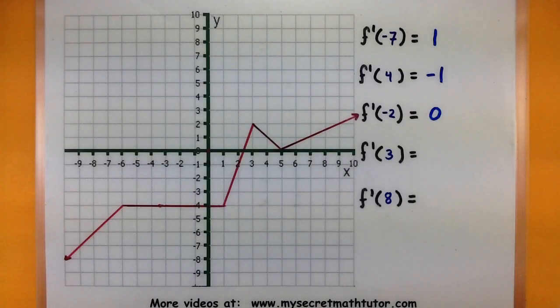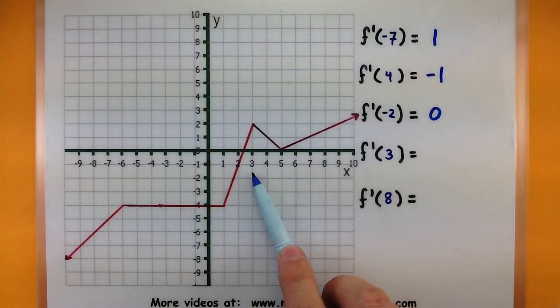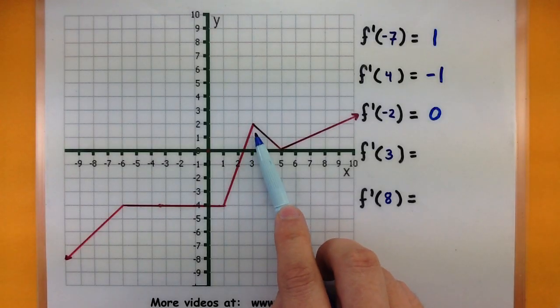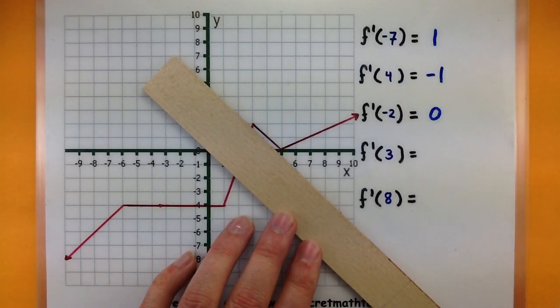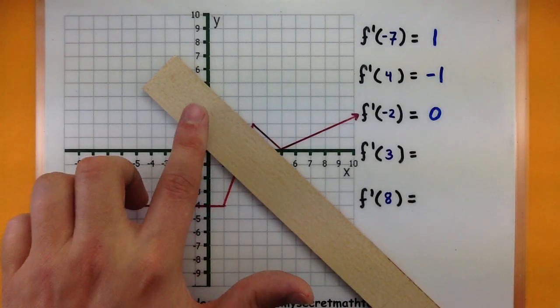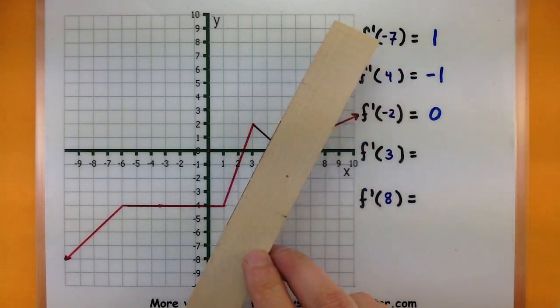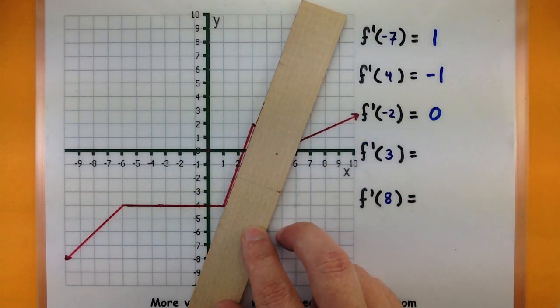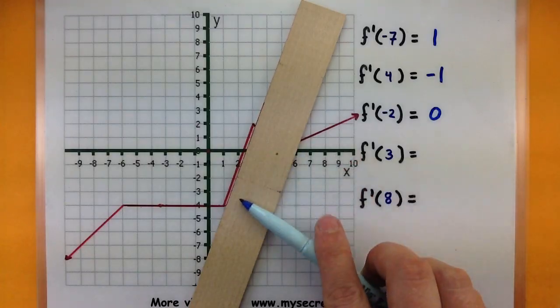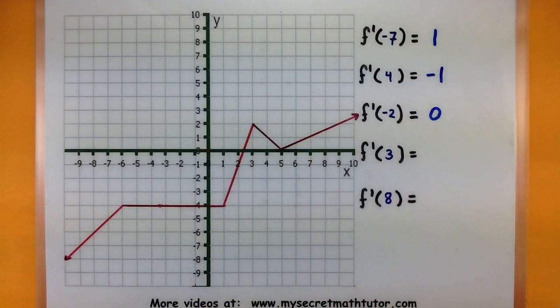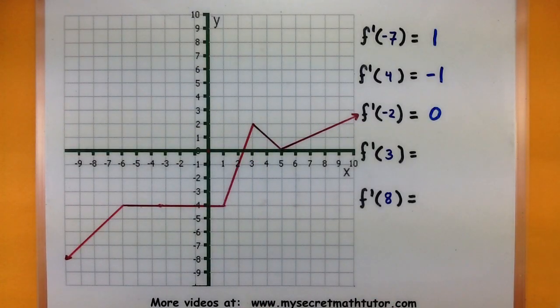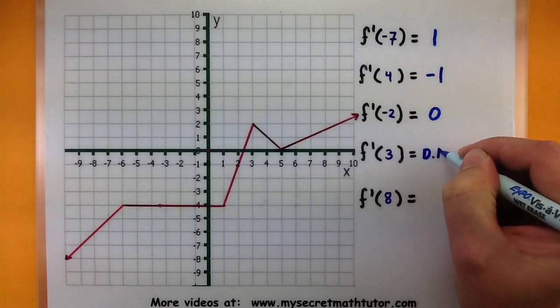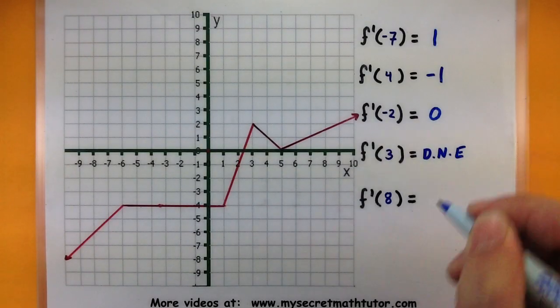All right couple more. What is the derivative at 3? Oh very interesting. Now notice that if we're looking at it say from the right side it looks like it has a negative slope. Things are going down. But if we look at it from the other side it looks like it has a positive slope. Things are going up. Well I'm interested at what's happening exactly at 3 and I can't really say one way or another. In fact that's one of those places a corner where the derivative does not exist. So I'm just going to write does not exist at that point.